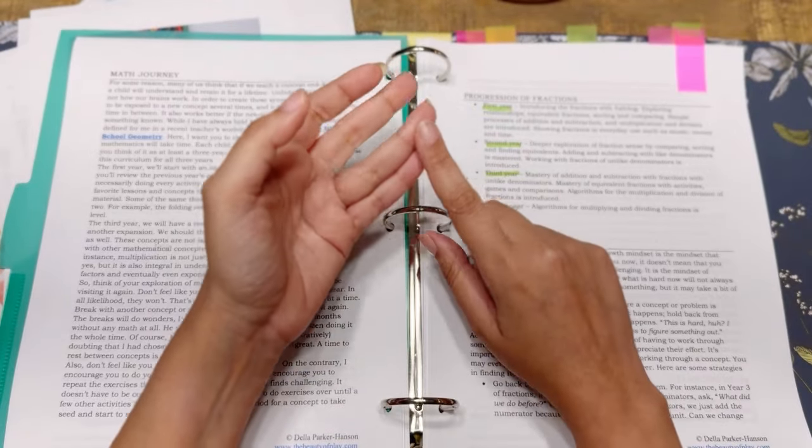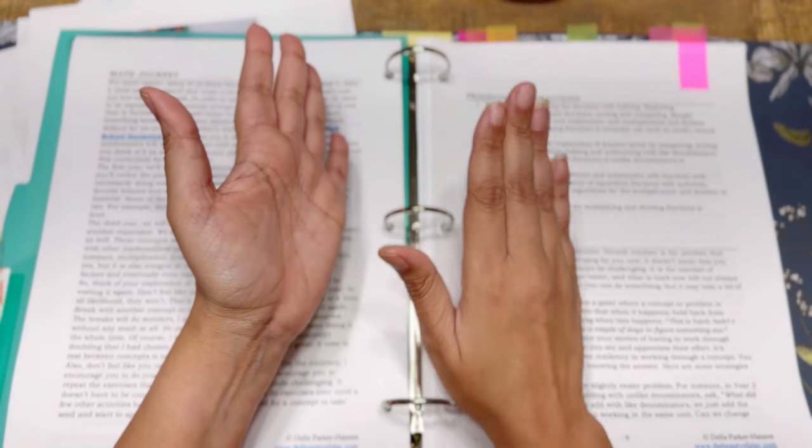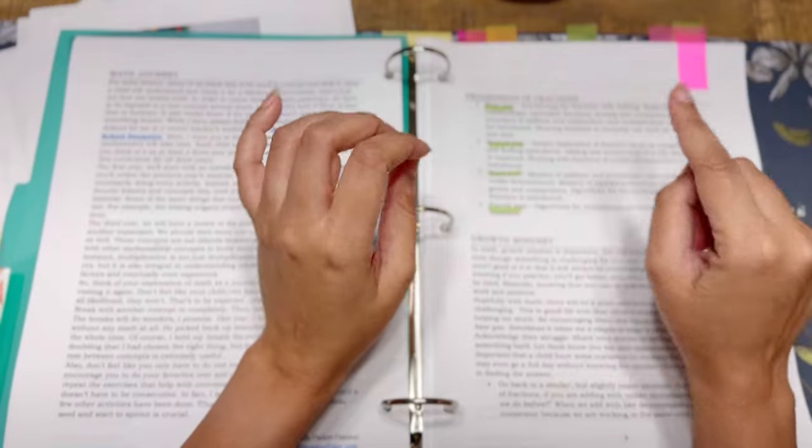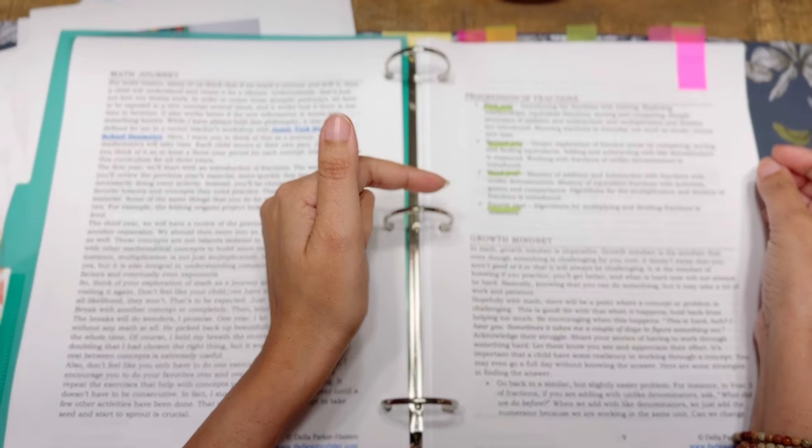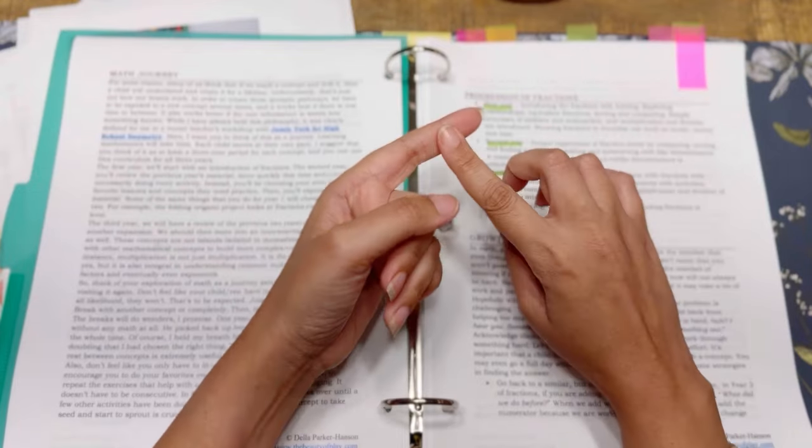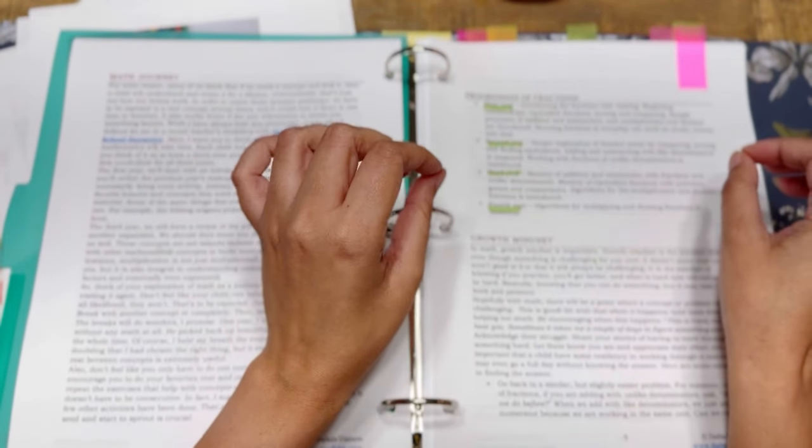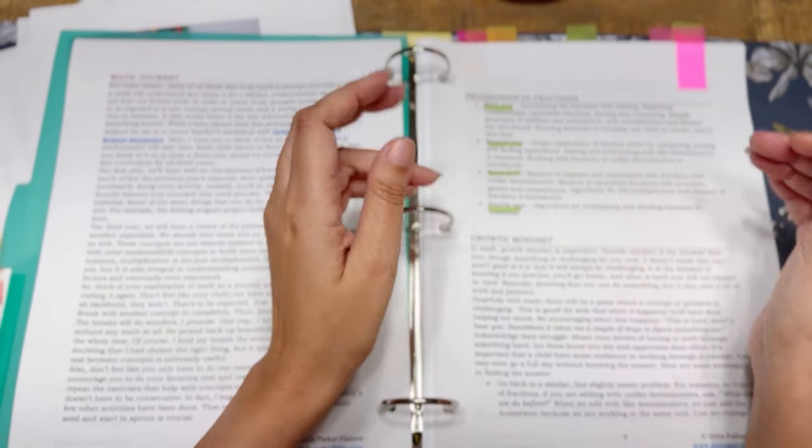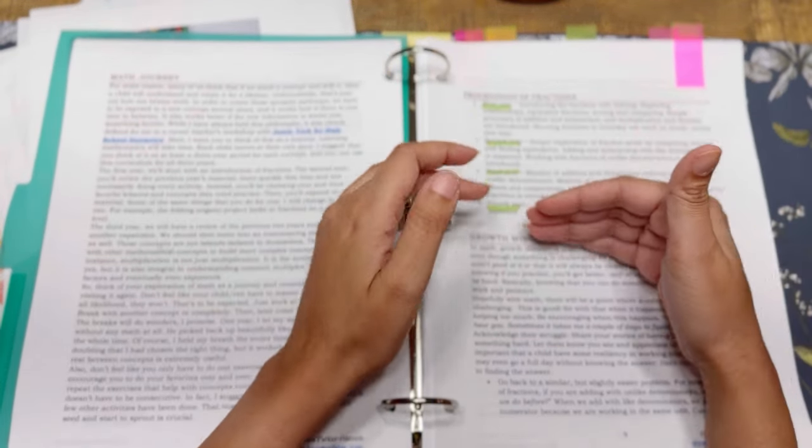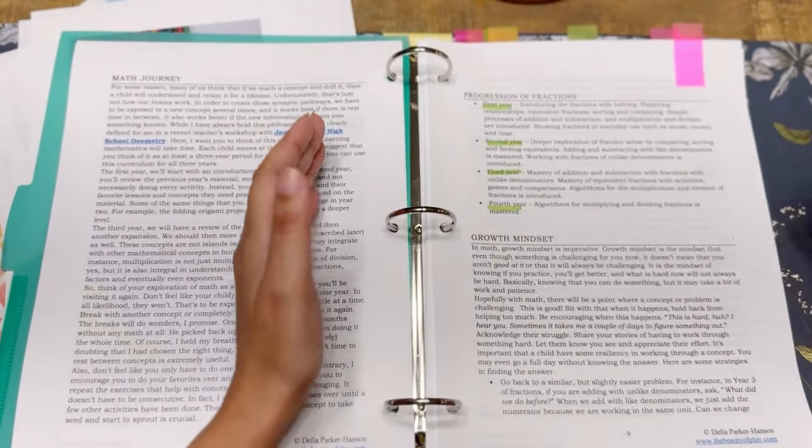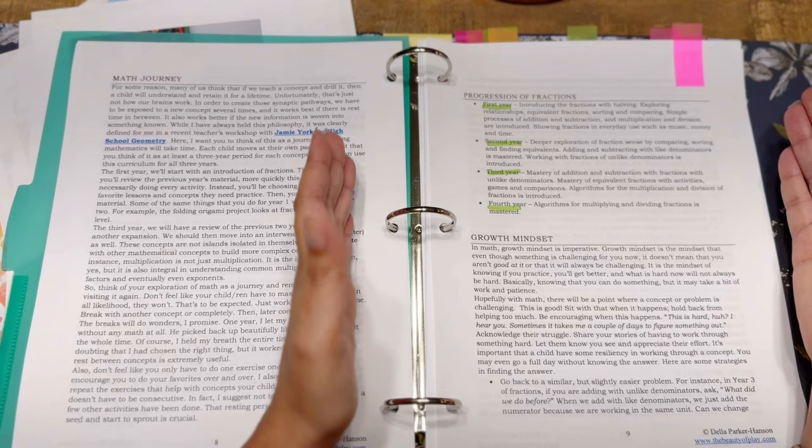Then the math journey, so the fractions of the fractions. So in year one, you're introducing fractions by halving, exploring relationships, equivalent fractions, sorting, and comparing simple processes of addition and subtracting and multiplication and division are introduced. So showing fractions in everyday use, such as music, money, and time. That's year one. Year two, deeper explorations of fraction sense by comparing, sorting, and finding equivalents, adding and subtracting like denominators mastered, working with fractions with unlike denominators is introduced. Third year, this is where we're at right now. Mastery of addition and subtracting with fractions with unlike denominators, mastery of equivalent fractions with activities, games, and comparisons. Algorithm for the multiplication and division of fractions is introduced. Year four, algorithm for multiplying and dividing fractions is mastered.